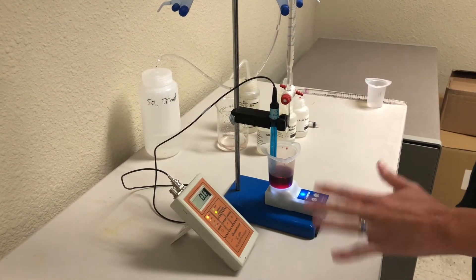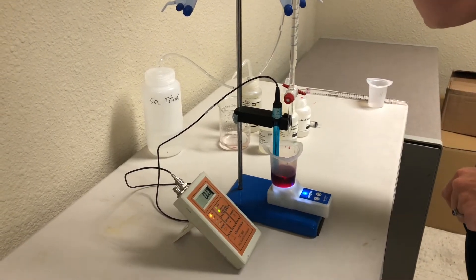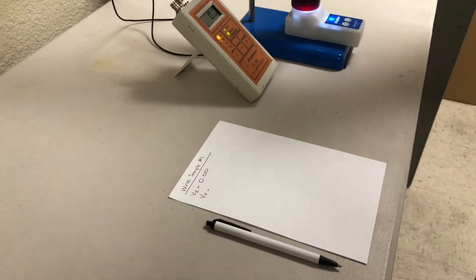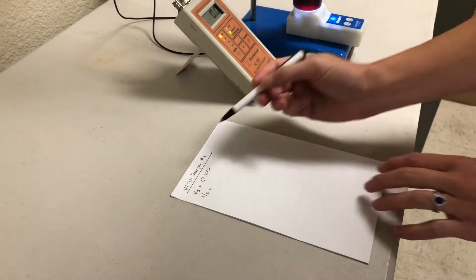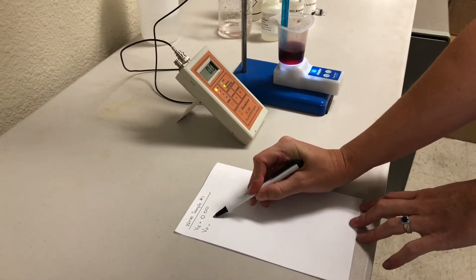My units read 0, which is good. That means I'm ready to run the test. I've made a note of my starting volume on my burette, which is 0, and I'll want to record the final volume once I've completed the titration.